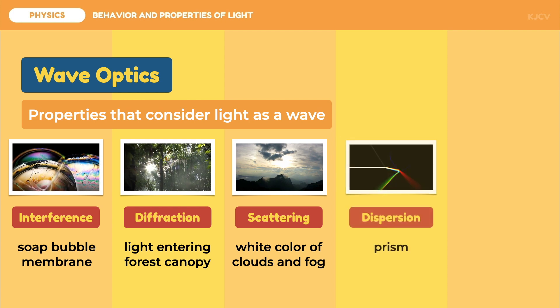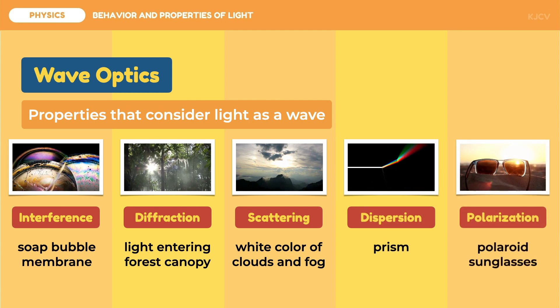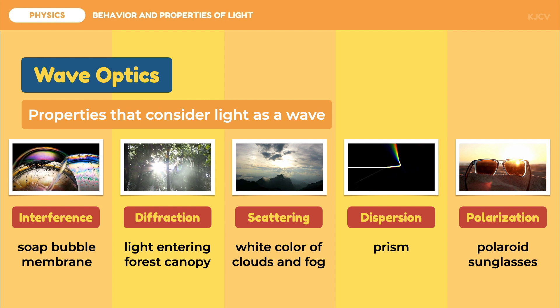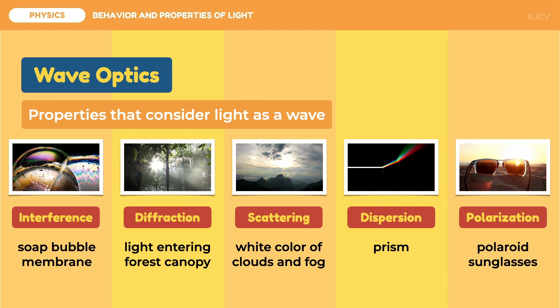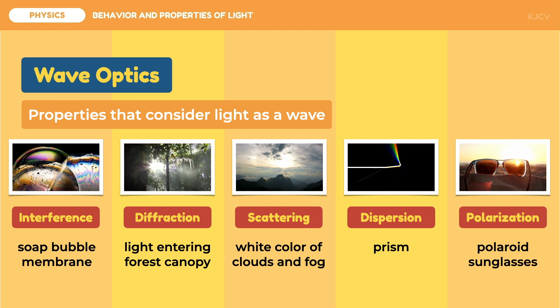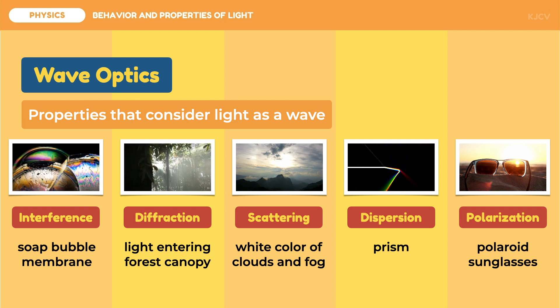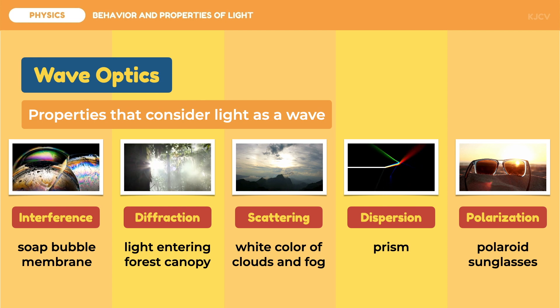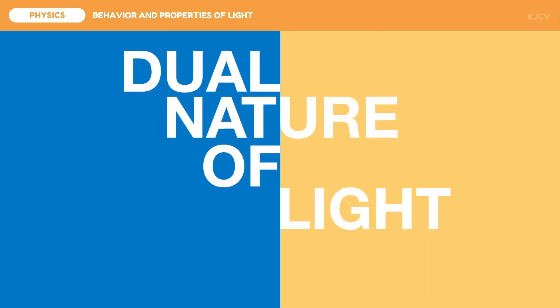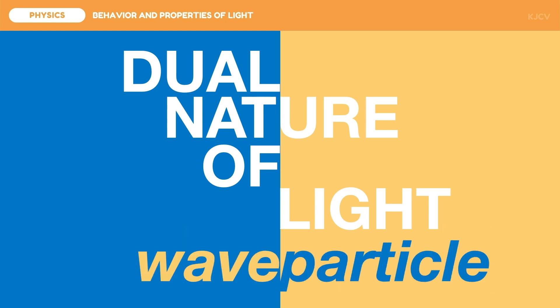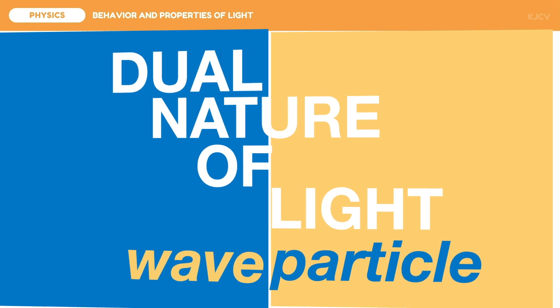The two natures of light which we discussed are both valid. Some properties can only be explained by the particle theory. Some properties can only be explained by the wave theory. This gives rise to the dual nature of light. This means that light behaves either as a wave or a particle. Other developments have also risen which agree to either of the two behaviors of light.